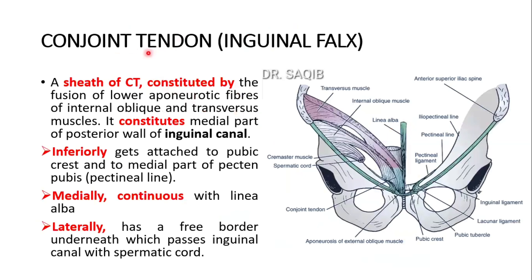The conjoint tendon is a sheath of connective tissue constituted by the fusion of the lower aponeurotic fibers of the internal oblique and transverse abdominus muscle. It constitutes the medial part of the posterior wall of the inguinal canal.